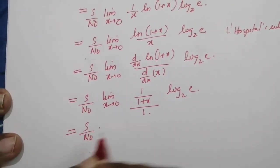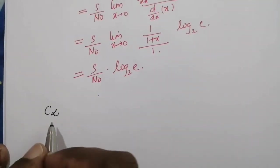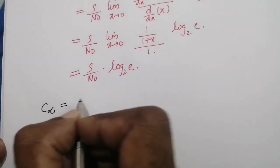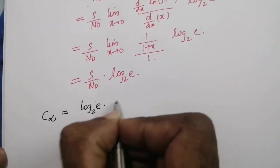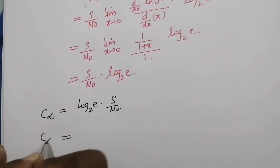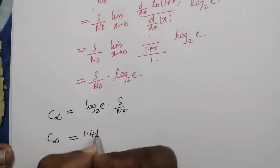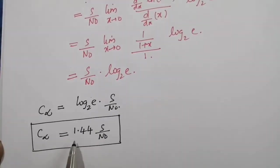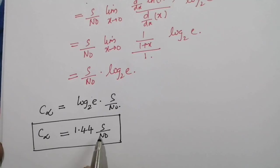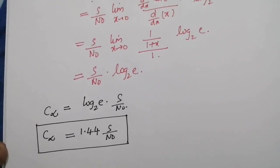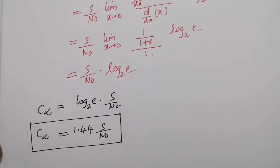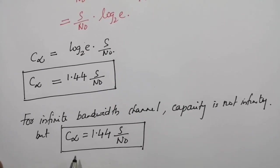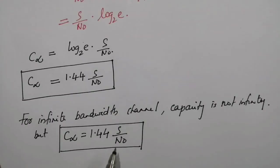Therefore, the capacity of an infinite bandwidth channel is given by C∞ = log₂(e) · (S/N0), which equals 1.44 · (S/N0), since log₂(e) = 1.44. This gives the upper limit on channel capacity as B tends to infinity. Thus we have proved that for an infinite bandwidth channel, the capacity is not infinity but is bounded by the upper limit 1.44 · S/N0.